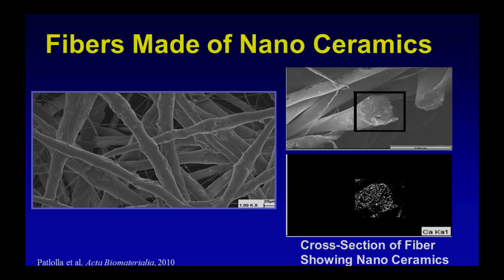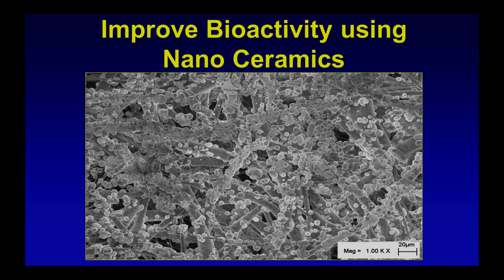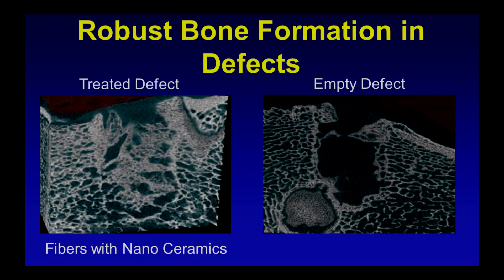Going back to the bone application — how do we actually improve the rate of bone repair? We've designed these fiber-based materials and incorporated one more interesting feature: nanoceramics embedded and dispersed throughout the fibers. When you get down to this really small scale, those ceramics become extremely reactive. When put into the body, they become so reactive that they actually form bone mineral on the surface of these materials — which is critical for cells to begin forming bone tissue. Just the material alone will rapidly and quickly produce new bone tissue because those nanoceramics react so quickly.